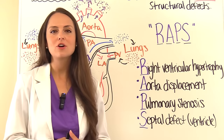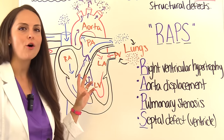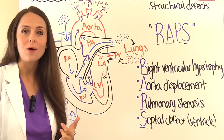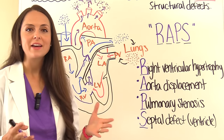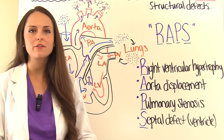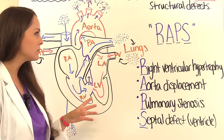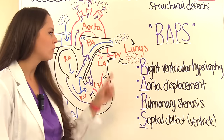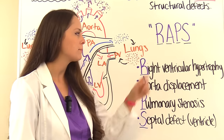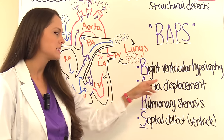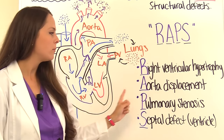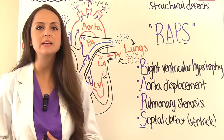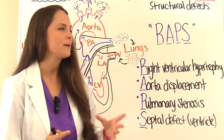However, with Tetralogy of Fallot the heart is not set up this way. Structural defects alter blood flow. There are four defects, and to remember them use the mnemonic RAPS: R for right ventricular hypertrophy, A for aorta displacement, P for pulmonary stenosis, and S for a septal defect — specifically a ventricular septal defect.